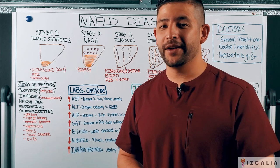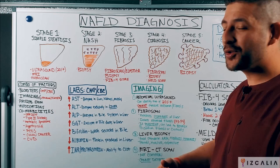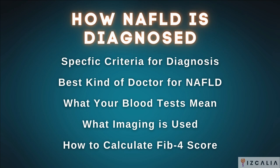In today's video, we're going to be talking about how NAFLD, or non-alcoholic fatty liver disease, is actually diagnosed — specifically the criteria, what doctors you should be seeing that specialize and have the necessary training to deal with this condition, what your blood test results actually mean, what imaging equipment is used and the differences between an ultrasound and fibroscan, and how to calculate your FIB4 score to identify what level of fibrosis you may potentially be at.